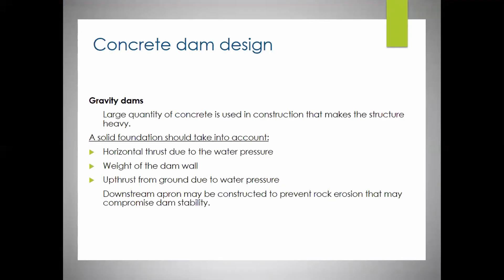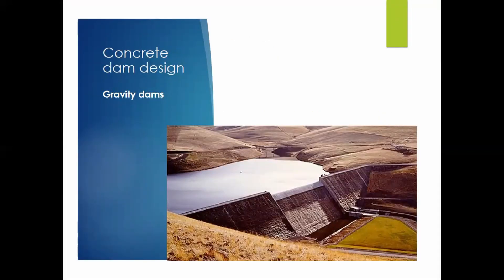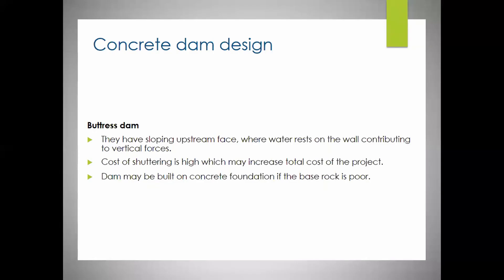For concrete dams, the first type is gravity dams. A large quantity of concrete is used in construction, making the structure heavy. A solid foundation must take into account horizontal thrust due to water pressure, the weight of the dam wall, and the up-thrust from the ground due to water pressure. A downstream apron may be constructed to prevent rock erosion that could compromise dam stability.